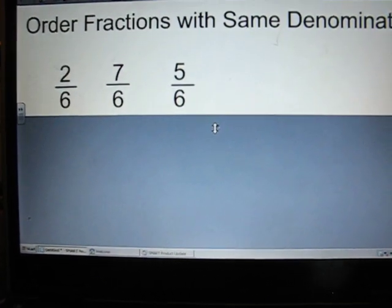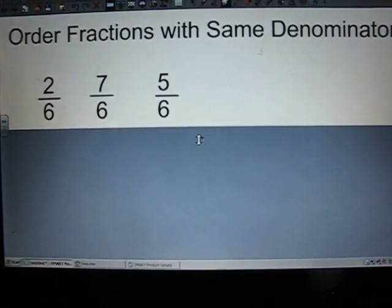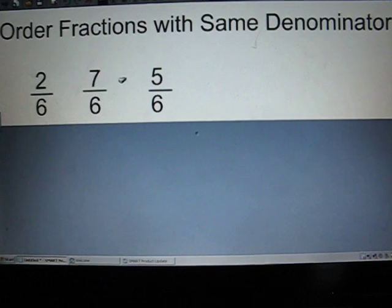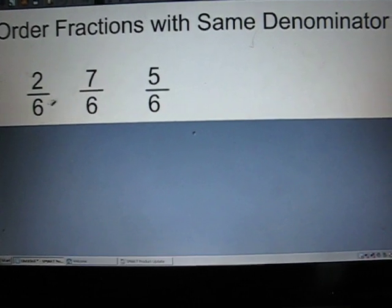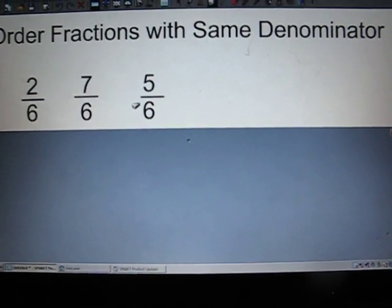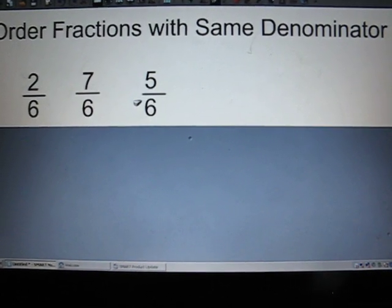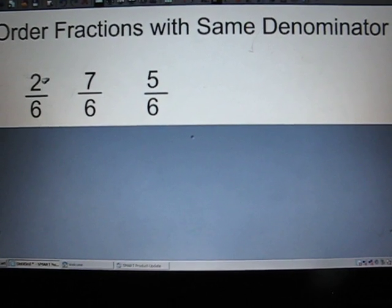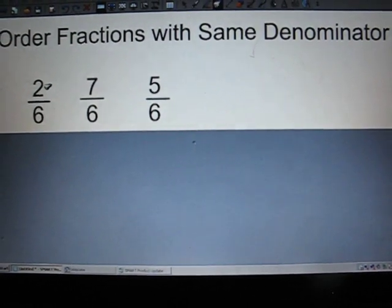So our fractions for this problem are 2 sixths, 7 sixths, and 5 sixths. We notice that our denominators all are the same. So if our denominators are all the same, we have to look at our numerators to tell us which ones are bigger and which ones are smaller.